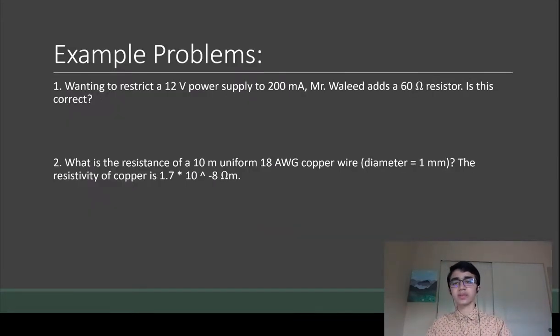I'm going to jump into some example problems. If you aren't able to figure them out, don't worry. As long as you get the gist of the concepts, you'll be fine. But if you want to try these: the first one is wanting to restrict a 12 volt power supply to 200 milliamps, Mr. Waleed adds a 60 ohm resistor - is this correct?